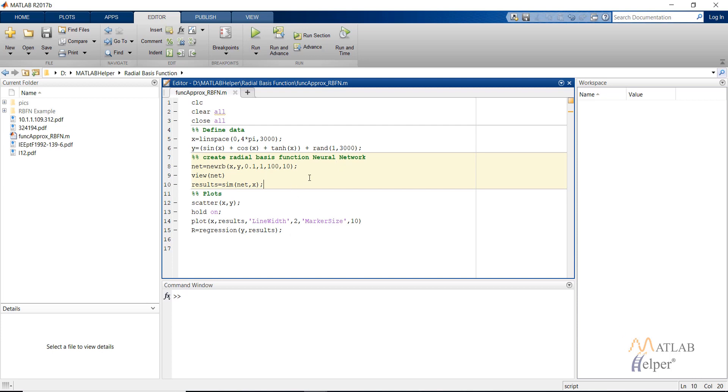For getting a good value of spread, it is recommended to select it as an average of the distances between the data points of your data set.